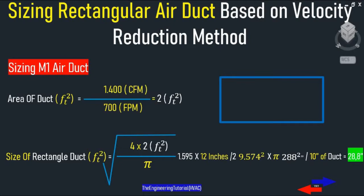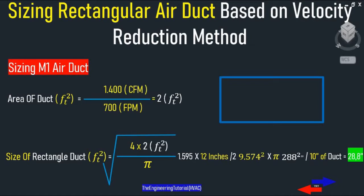So 288 square inches can be divided by the height or width of the main supply duct. Based on your own needs, you can determine how many inches the height of your duct needs to be. For example, let's say we want the height of our main supply duct to be 10 inches, so its width would be 28.8 inches. We simply divide 288 square inches by the height of 10 inches.